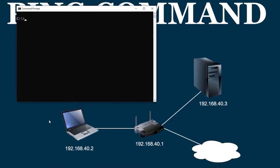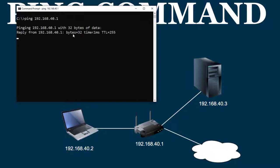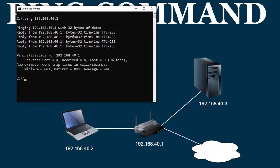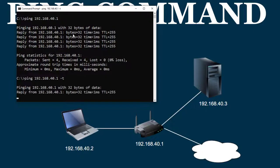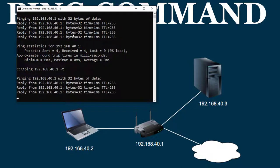Let me walk through some examples. I'm on my laptop and I'm going to ping my gateway at 40.1. You can use either the hostname or the IP address. You can see it's replying. By default it sends four packets and receives four replies. If I want a continuous ping, I can do ping -t and it will keep pinging until I stop it.